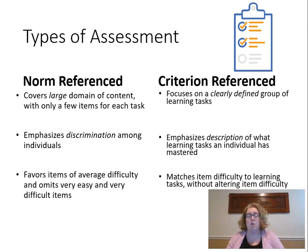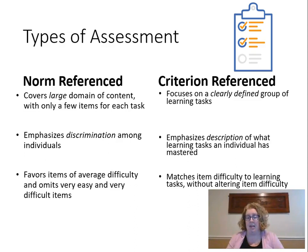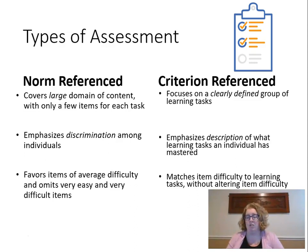In norm-referenced tests, I tend to have lots of items of average difficulty, with things that are very easy or very difficult eliminated. Whereas in criterion-referenced tests, I'm less concerned about item difficulty and more concerned about thinking about the whole construct of what I'm measuring.